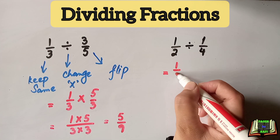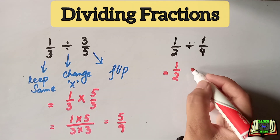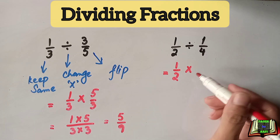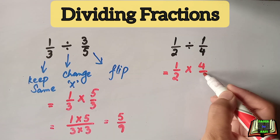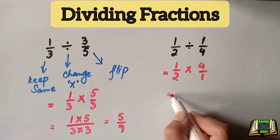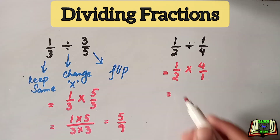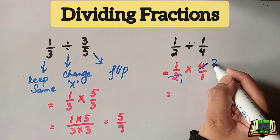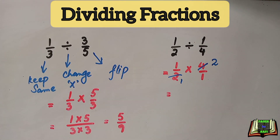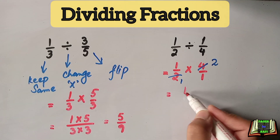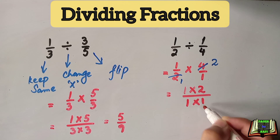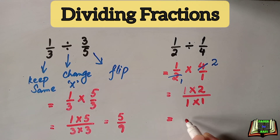Now let us see another example: one by two divided by one over four. The dividend will be the same, the divide sign will be changed into a multiply sign, and one by four will be changed into four by one. We can see that two and four can be cancelled out — two ones are two, two twos are four. Now we multiply the numerator and denominator.